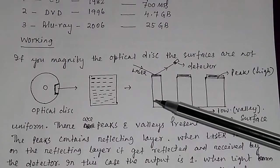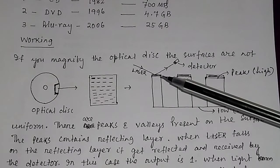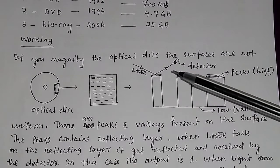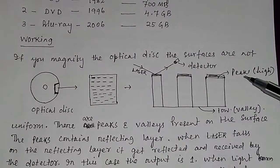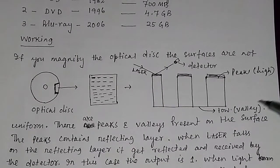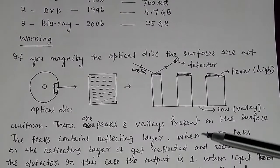And if light falls on this peak, the reflected light is received by the detector and the output, we say it is high or output is one.